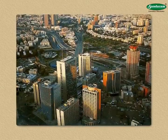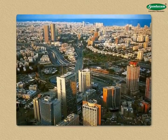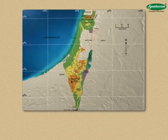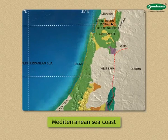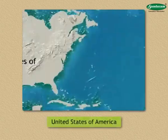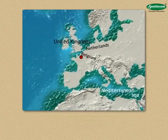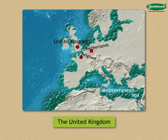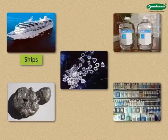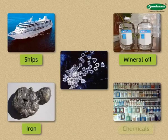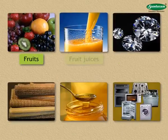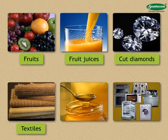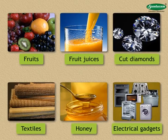This country has industrial cities like Tel Aviv. The Mediterranean Sea coast has become important from the point of view of world trade. Israel carries on trade mainly with the United States of America, Belgium, the Netherlands, and the United Kingdom. Israel imports ships, mineral oil, iron, chemicals, and uncut diamonds, and exports fruits, fruit juices, cut diamonds, textiles, honey, and electrical gadgets.